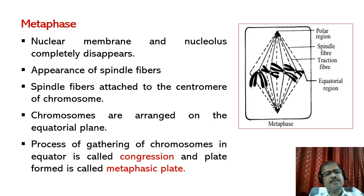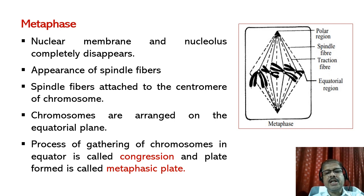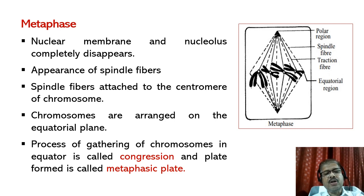In metaphase, the nuclear membrane and nucleolus completely disappear, and simultaneously spindle fibers appear. The spindle fibers are attached to the centromere of each chromosome. The chromosomes are arranged on the equatorial plane — the process of gathering of chromosomes at the equator is called congression, and the plate formed is called the metaphase plate.